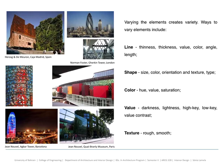In the line, you can vary thickness, thinness, value, color, angle, and length. In the shape, you can vary the size, color, orientation, texture, and type. With color, you can change the hue, value, and saturation. With value, you can vary the darkness, lightness, high key, or low key. And texture could be rough or smooth.